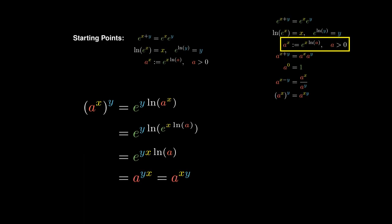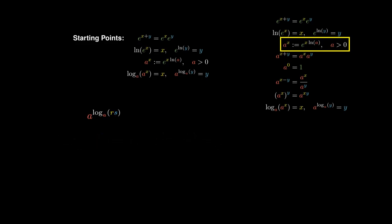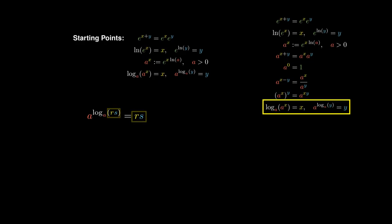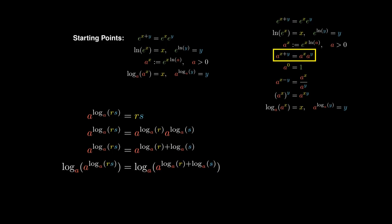We can also define reversing the exponential with base a via the logarithm base a. The logarithm base a will reverse the action of the exponential with base a. This allows us to consider the expression a to the log base a of r times s. Since exponentials and logarithms undo one another, the right-hand side simplifies to rs. On the other hand, we can write r as a to the log base a r, and express s in a similar manner. On the right-hand side we have a product of exponentials, which is equal to the exponential of the sum. We can take logarithm base a on both sides, and since logarithms and exponentials cancel each other out, we are left with the logarithm of a product equaling the sum of logarithms.